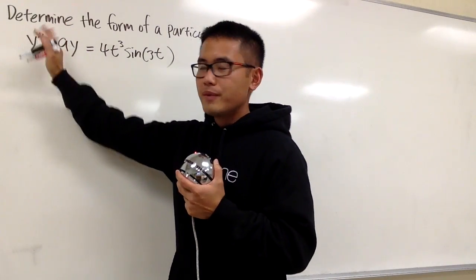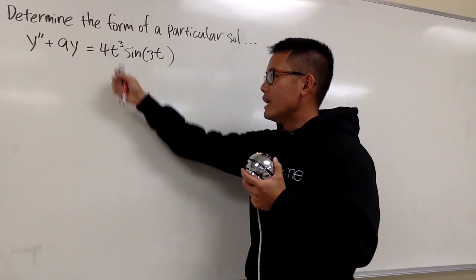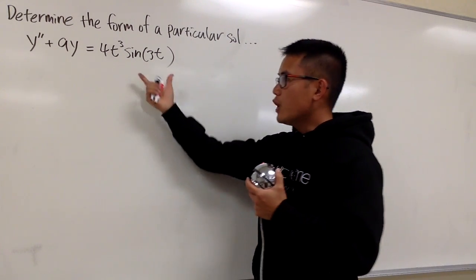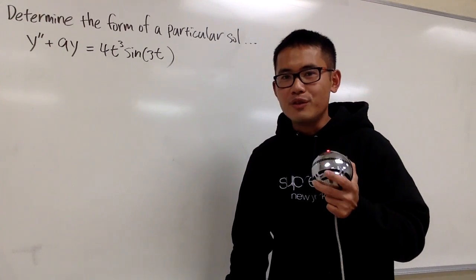So first of all, just ignore this for now. Look at the right-hand side. We have a polynomial multiplying by sine of 3t, right? So we know we can do this by the method of undetermined coefficient.